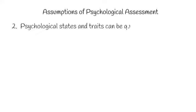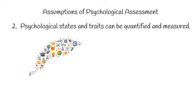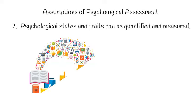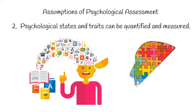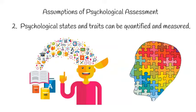States also distinguish one person from another but are relatively less enduring. The second major assumption is that psychological states and traits can be quantified and measured. Once it is acknowledged that psychological traits and states do exist, then it can also be assumed that they can be quantified and measured. There are many debates as to the best way to measure these traits and states, and the challenge is to find the best way to measure them in a way that reflects their existence in real life.